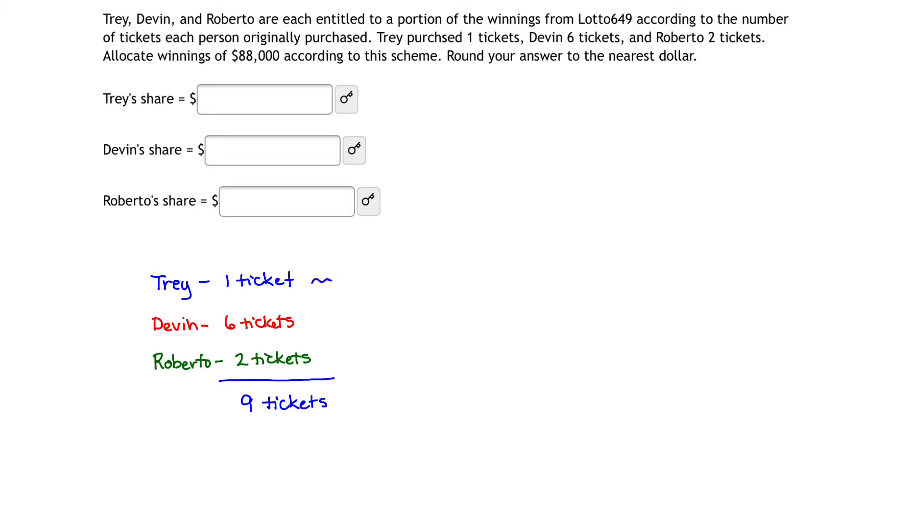Therefore, proportionally, Trey should receive one out of ninth of the winnings. Devin should receive six out of ninths of the winnings. And Roberto should be receiving two ninths of the total winnings. Now, we can either just multiply fractions or if we want to practice this idea of proportionality, we will set up some proportions.